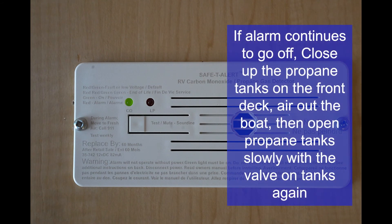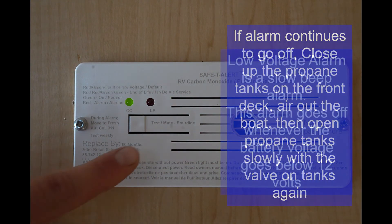If you need to and the alarm continues to go off, close up all your propane tanks on the front deck, let your boat air out, then you can open up the propane tanks afterwards. Once you close the propane tanks, all the propane going inside the boat is off.